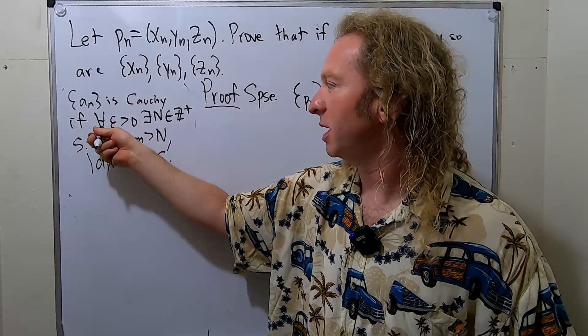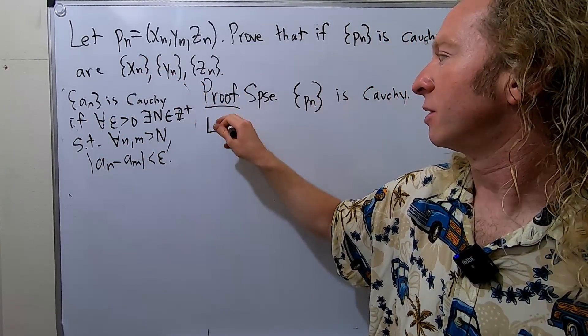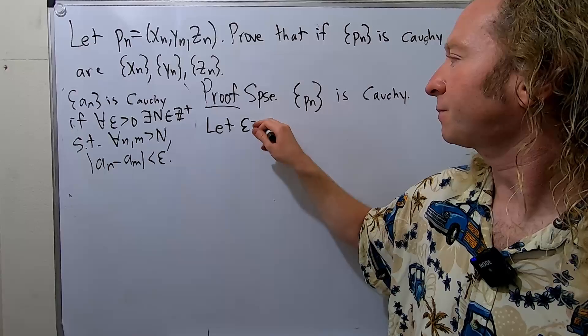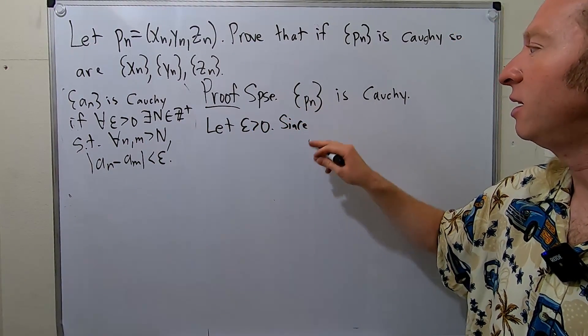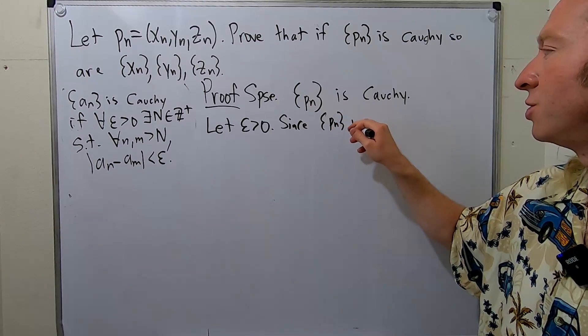So to show it's Cauchy, we'll start by taking an epsilon greater than 0. So let epsilon be greater than 0. Since this is Cauchy, now we're going to use the Cauchiness of P. So since little p sub n, this sequence is Cauchy.